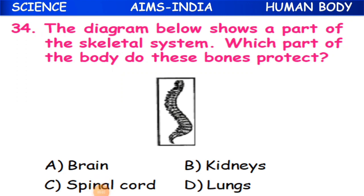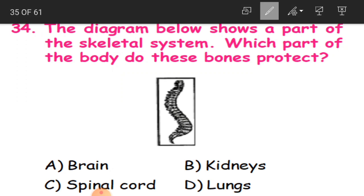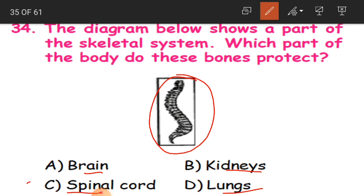Question 34: The diagram shows a part of the skeletal system. Which part of the body do these bones protect? The options are brain, kidneys, spinal cord, or lungs. The answer is spinal cord - these are the bones of the spinal cord which protect the spinal cord.